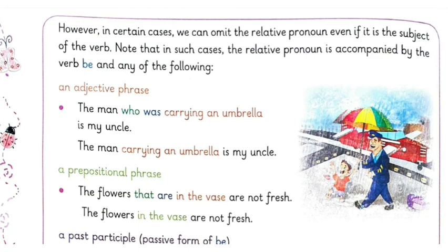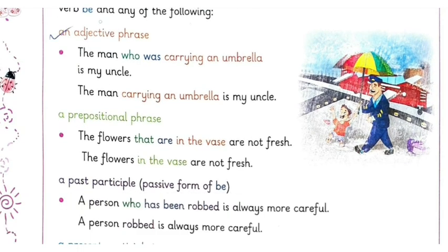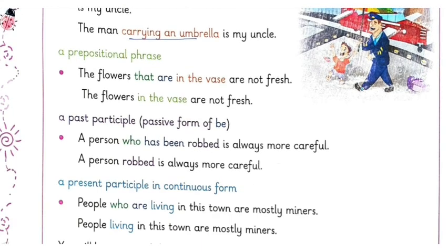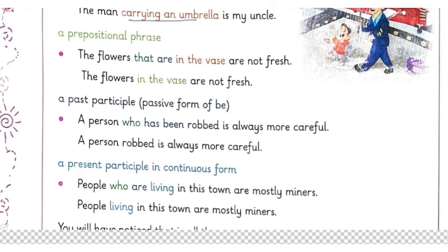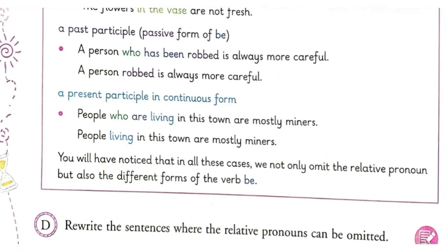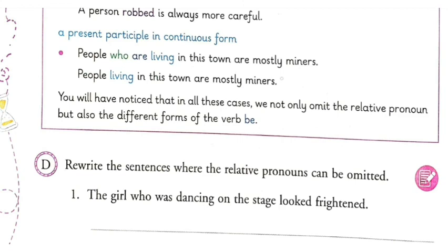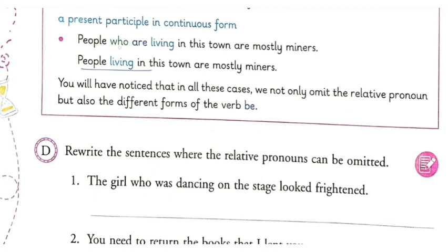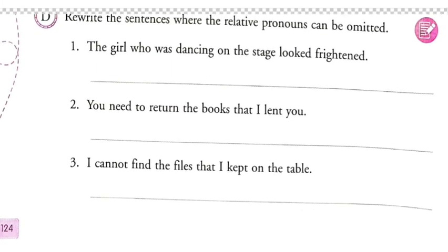However, in certain cases we can omit the relative pronoun even if it is the subject, when it is accompanied by the verb 'be' with an adjective phrase, participle phrase, or similar. For example: 'The man who was carrying an umbrella is my uncle' becomes 'the man carrying an umbrella is my uncle'. 'The flowers that are in the vase are not fresh' becomes 'the flowers in the vase are not fresh'. 'A person who has been robbed is always more careful' becomes 'a person robbed is always more careful'. 'People who are living in this town are mostly miners' becomes 'people living in the town are mostly miners'.